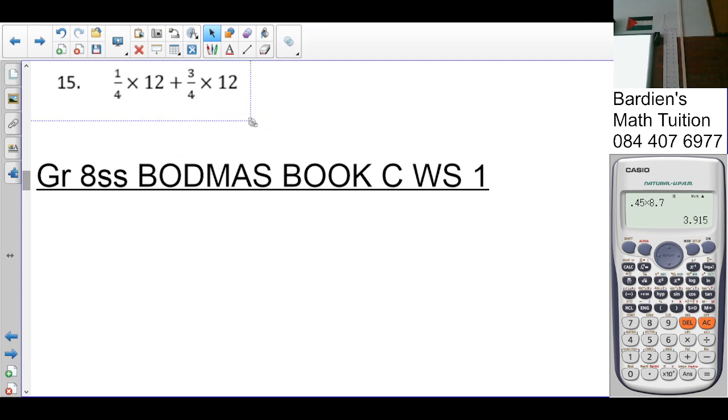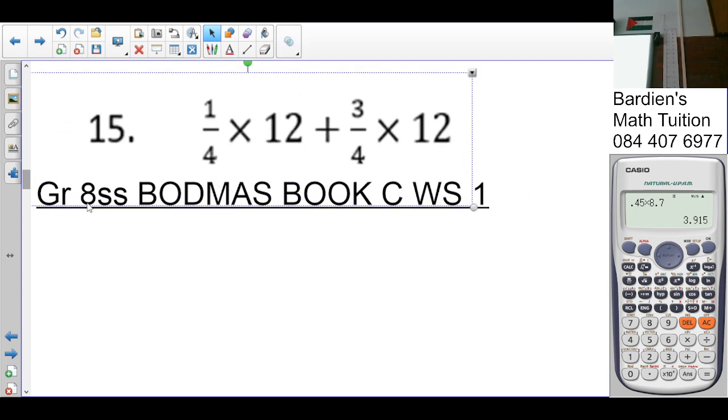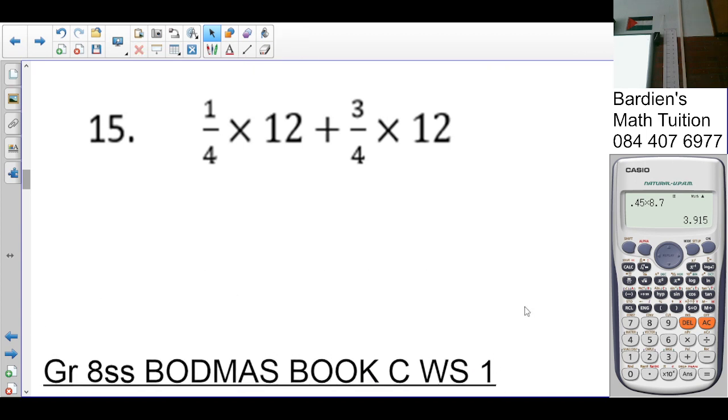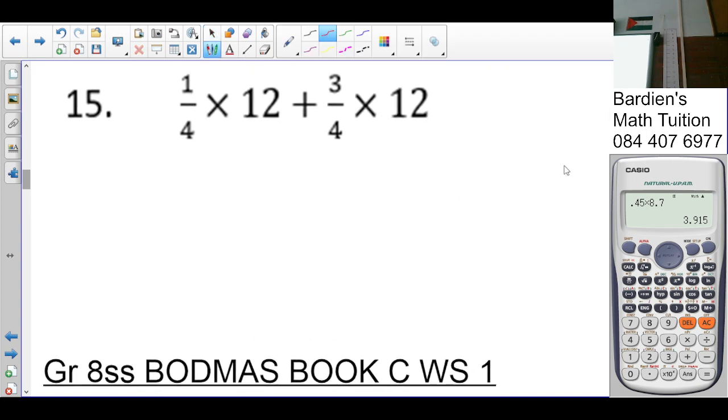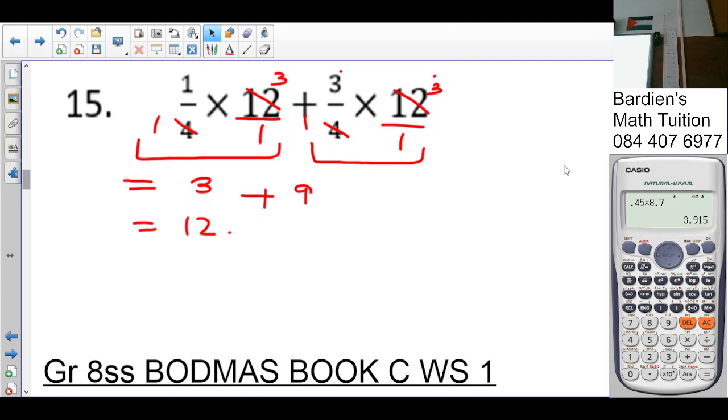Let's look at the next one. Number fifteen. What needs to be done first? Multiplication needs to be done first. Okay. So remember, this is naturally over one. So what's going to happen here? Four goes into four once. Four goes into twelve three times. One times three is three over one, which is three. Plus four going into four once. Four going into twelve three times. Three times three is nine over one, which is nine. Three plus nine is twelve. Any confusion there? No.